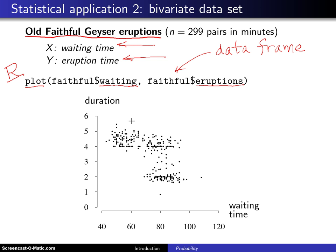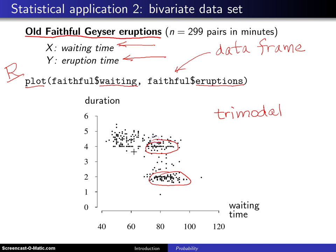A couple things to notice about this particular pairing of data. This looks to be what you might call a tri-modal data set, which is very unusual. There appears to be a mode somewhere around here — a high point in the distribution — another mode here, and then possibly a third mode there.